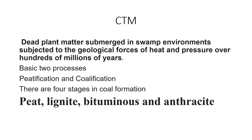Then the formation of lignite takes place — peat gets converted under geological pressure and time into lignite. Lignite, under pressure and over a period of time, gets converted into bituminous coal. And this bituminous coal, under pressure with passage of time, gets converted into anthracite. So these are the four stages in coal formation.